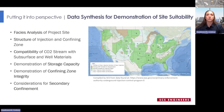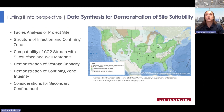Data synthesis for the demonstration of site suitability covers: facies analysis and the heterogeneity of porosity, permeability, and mineralogy in the injection and confining zones, and their associated effects on storage capabilities. The structure of the injection and confining zones is assessed to confirm the well is sited in an area meeting requirements. Compatibility of the CO2 stream — how the injectate will interact with subsurface fluids and solids — is evaluated. Demonstration of storage capacity, confining zone integrity, and considerations for secondary confinement if the initial zone does not meet all requirements are also addressed. While there is overlap with earlier sections, the key difference is that synthesizing all the information forms a comprehensive picture.